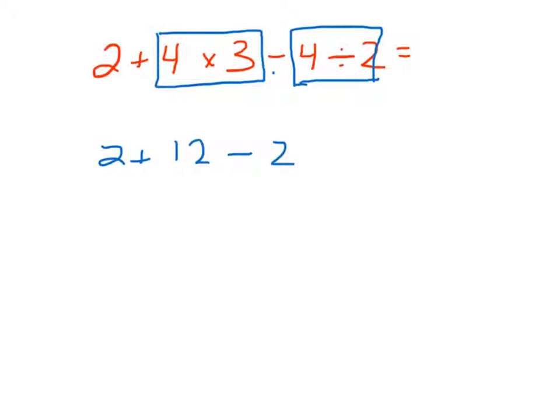Now we do the order of operations again from left to right. And I've only got addition and subtraction left. So, I can do those 2 plus 12 will be 14 minus 2. 14 minus 2 will be 12. So, our answer here for example 1 will be 12.